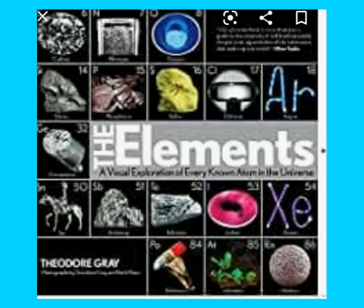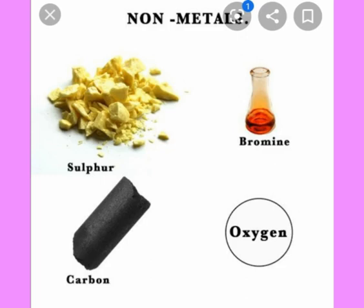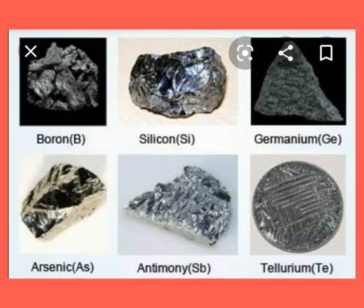We can classify the elements into metals, non-metals, and metalloids. Metals have the properties of high malleability and ductility. Non-metals are generally dull and soft. Metalloids fit the properties of both metals and non-metals. These are the things we learn about atoms and molecules.